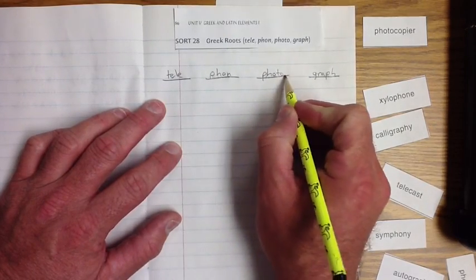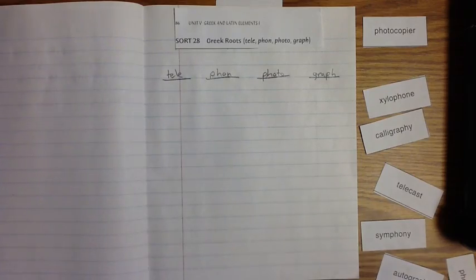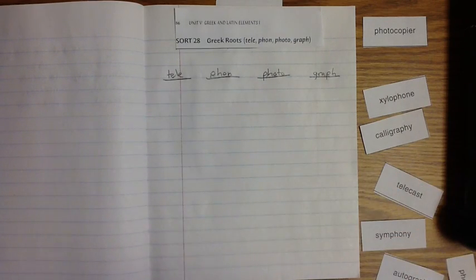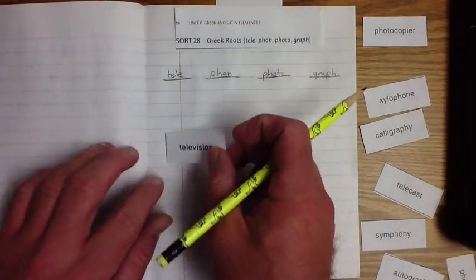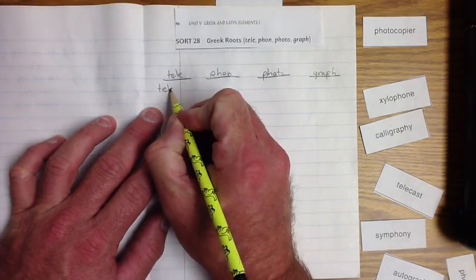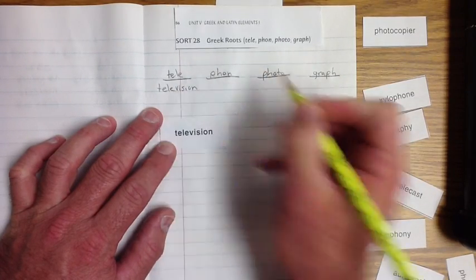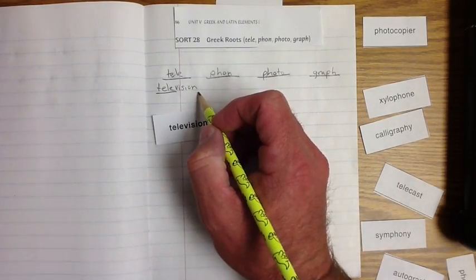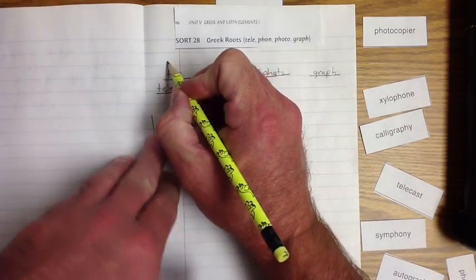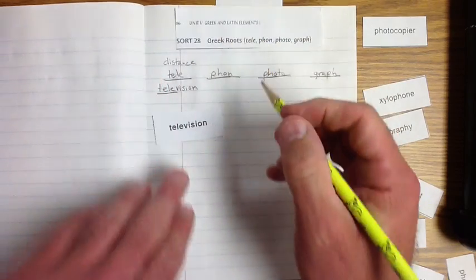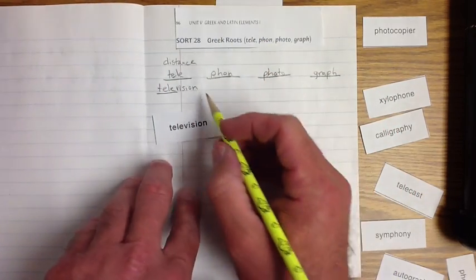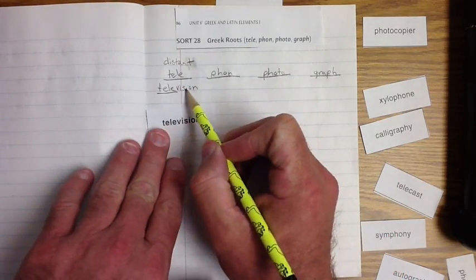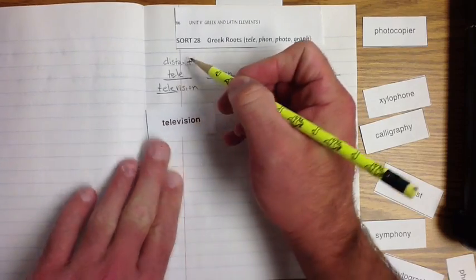So, tele, phone, photo, graph. I think what we're going to do first is, let's start with tele. And what do you think tele means? Let's put out this first one here, television. Everybody knows what a television is, right? Tele. And so what is vision? It's seeing, isn't it? Vision. Tele means distance, or distant. When we look at distant, television is vision from a distance. What do you think that means?